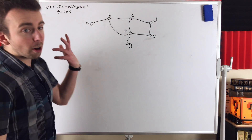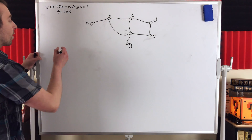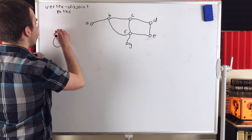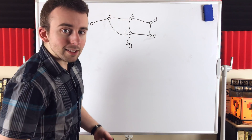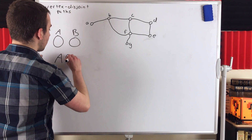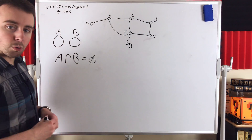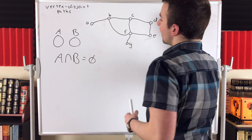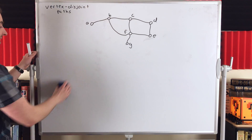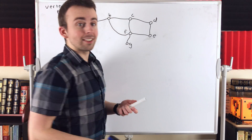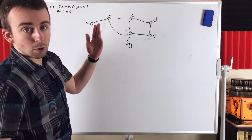What are vertex disjoint paths? You probably have a good idea what they are if you remember what disjoint sets are. Remember that we say two sets are disjoint, like these sets A and B, if they have no elements in common, so their intersection is empty. So what do you think vertex disjoint paths are? Well, predictably, vertex disjoint paths are paths that have no vertices in common.